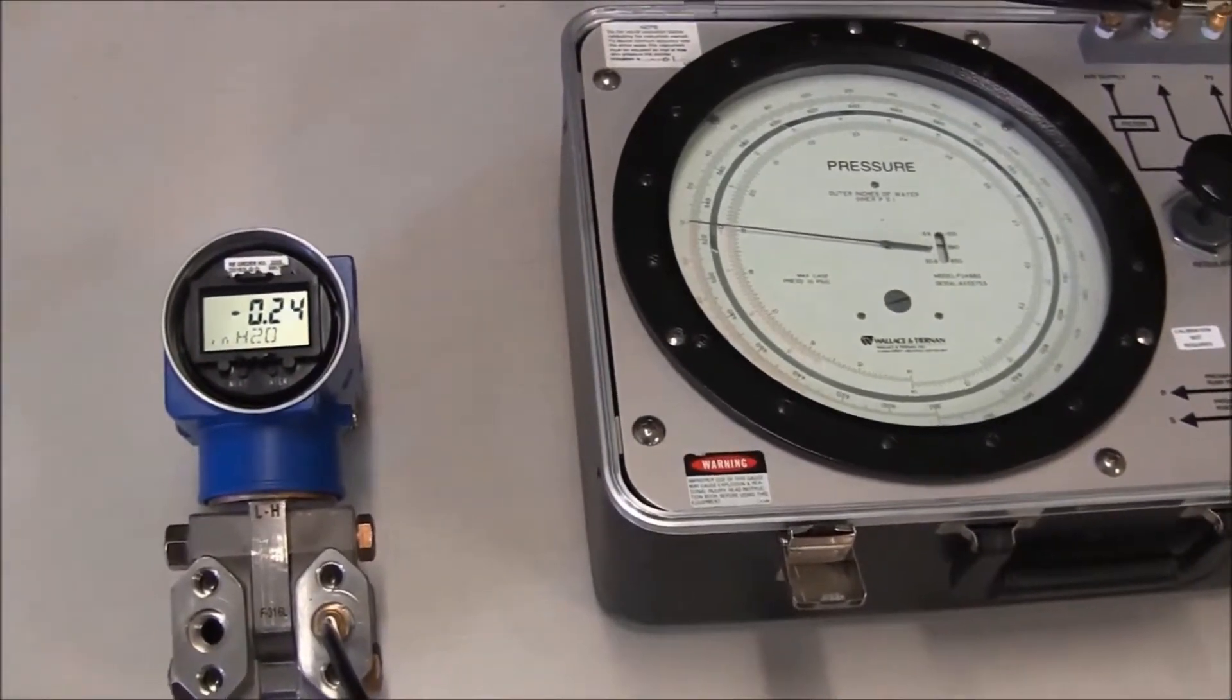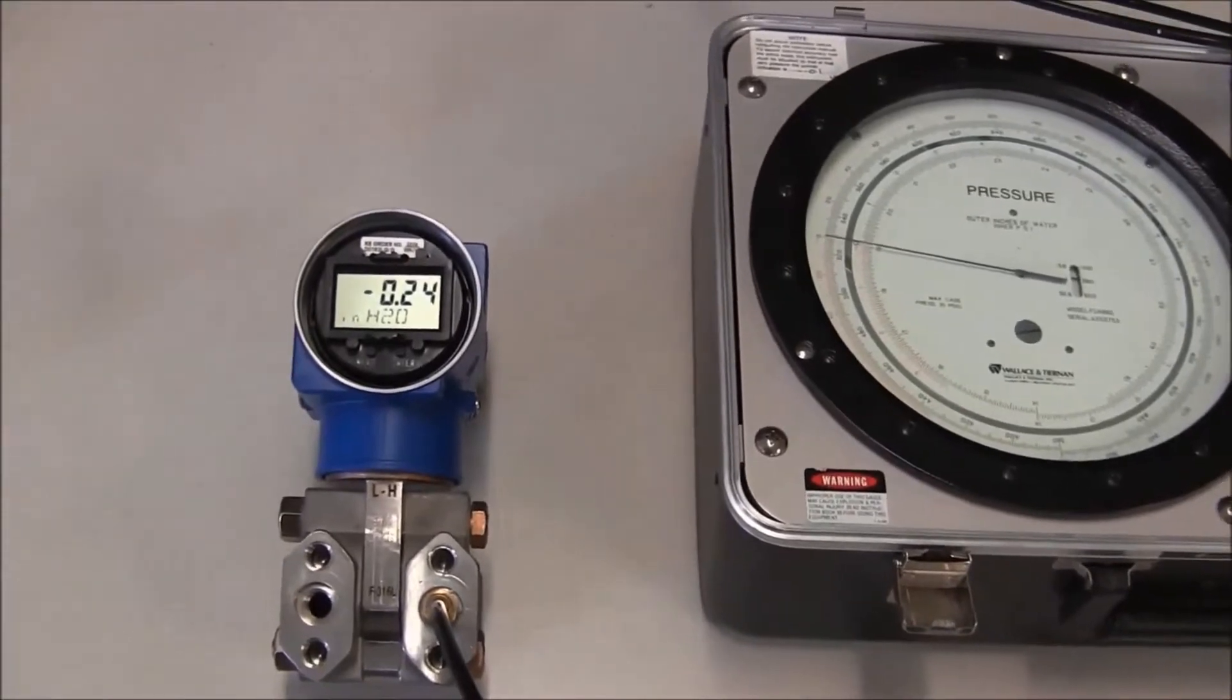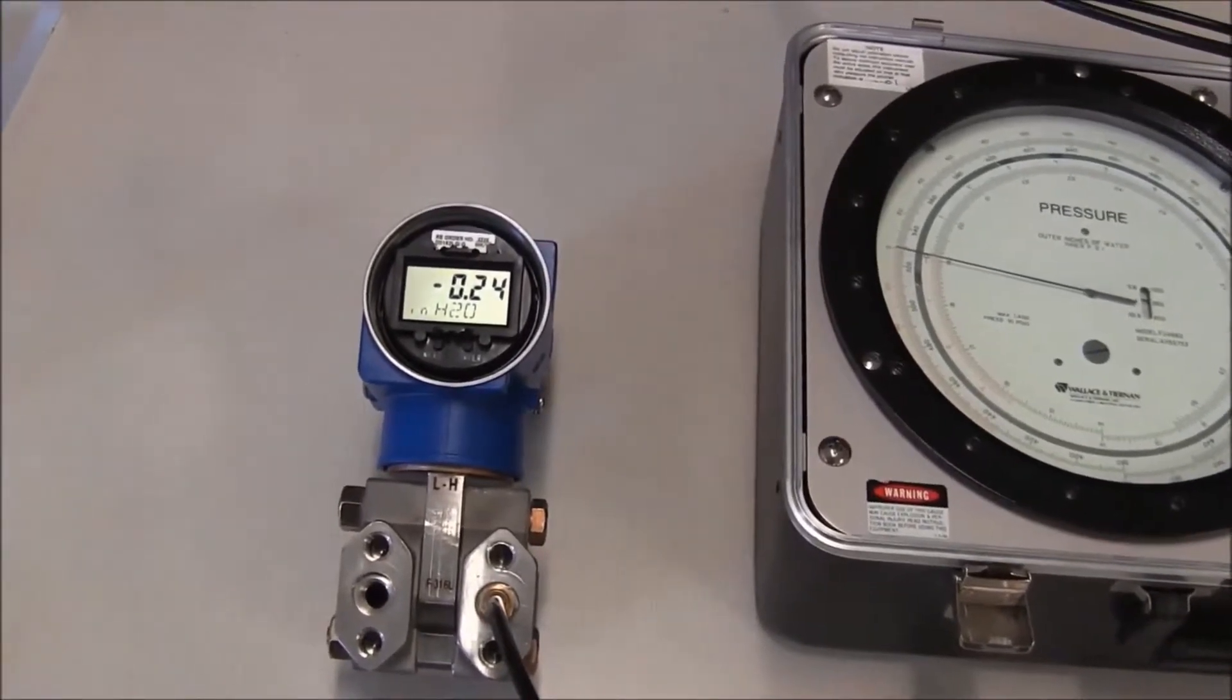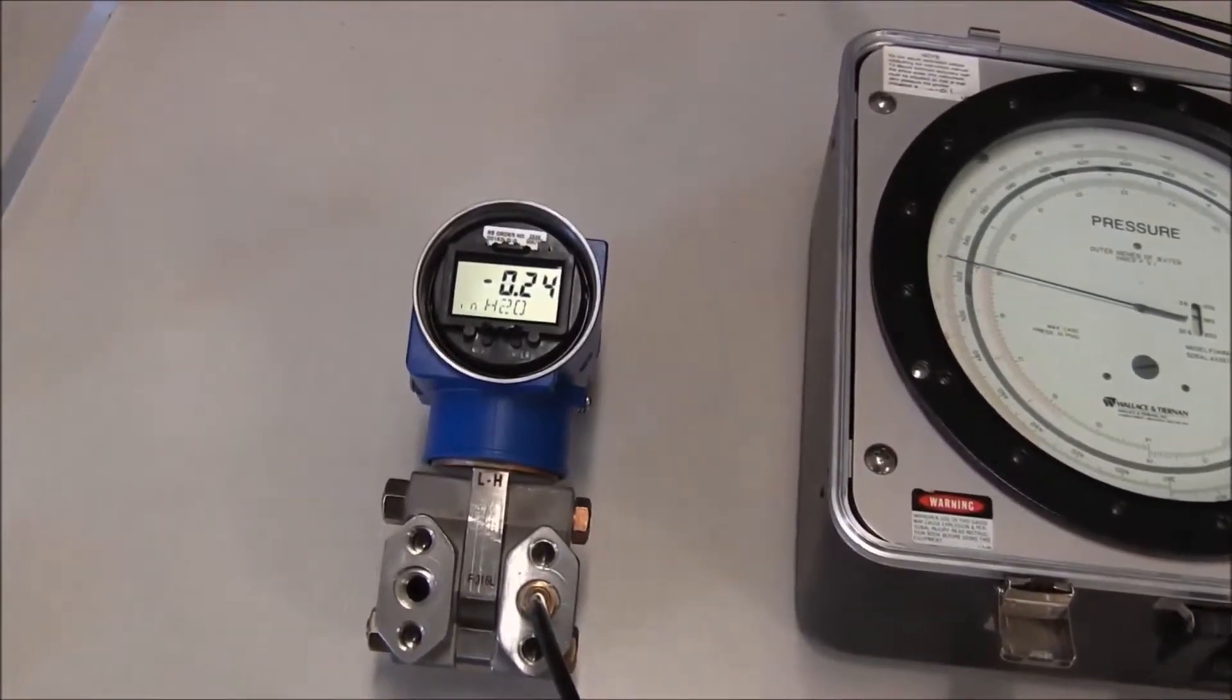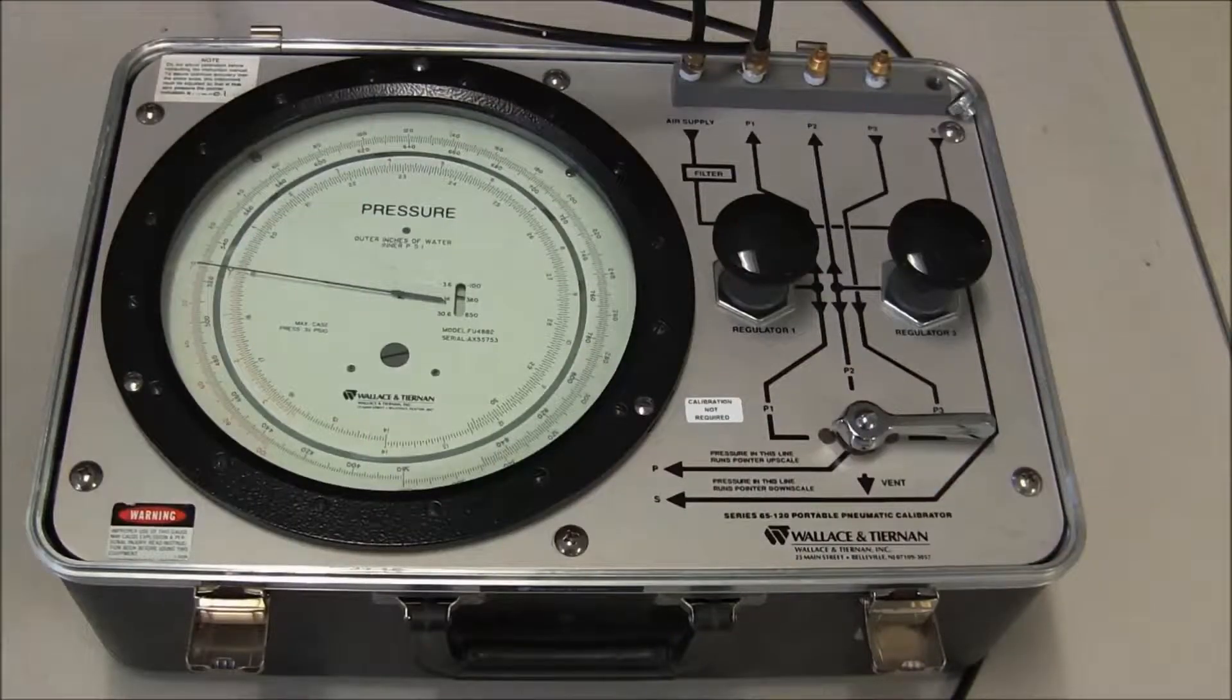In the following demonstration, we will perform a two-point calibration of the IDP10-T transmitter. This will require the use of an accurate pressure calibrator.